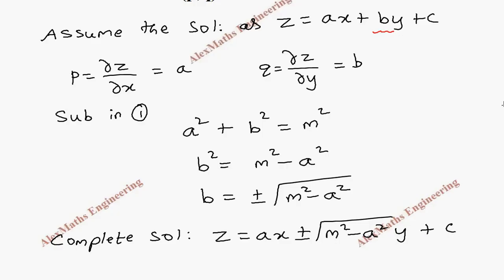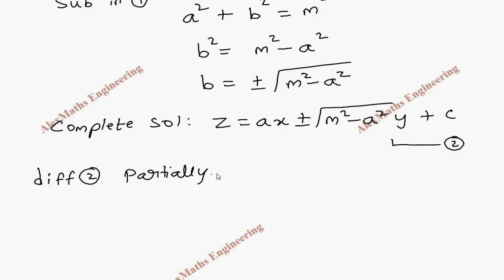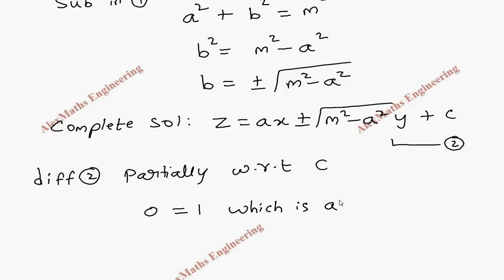Taking this as the second expression, we differentiate partially with respect to the constant c. On the left-hand side, differentiating z with respect to c gives zero since z is treated as a constant. All terms are constant except c, and the derivative of c is 1, so we get 0 = 1, which is absurd and not possible. Therefore, there is no singular integral.